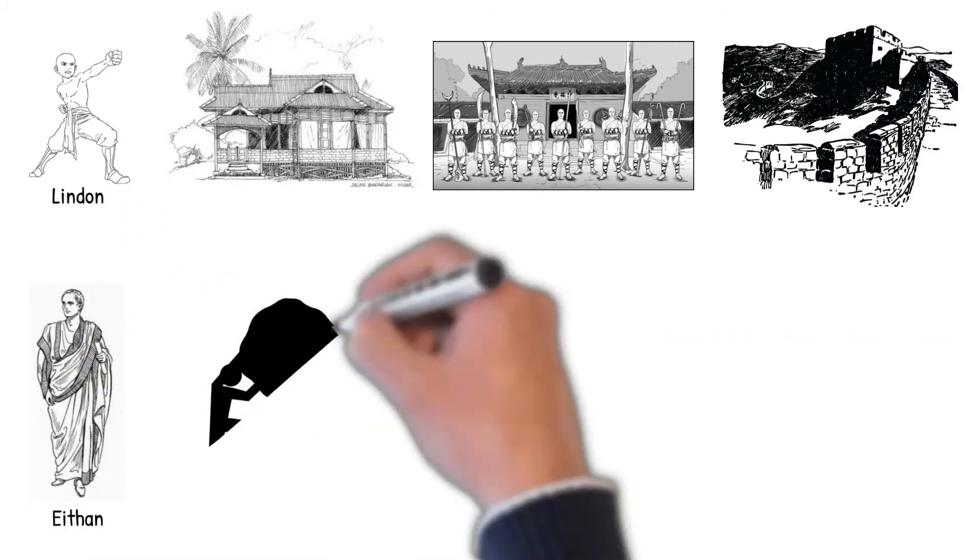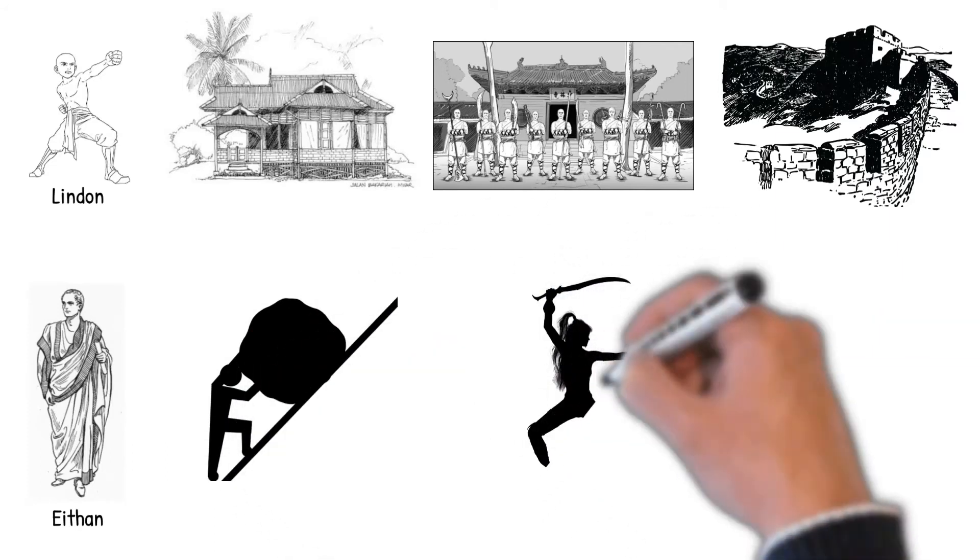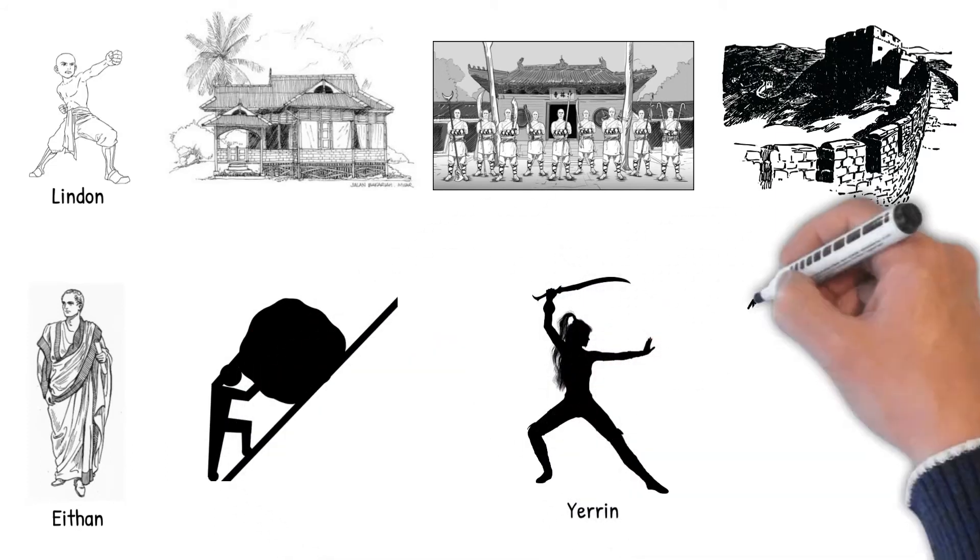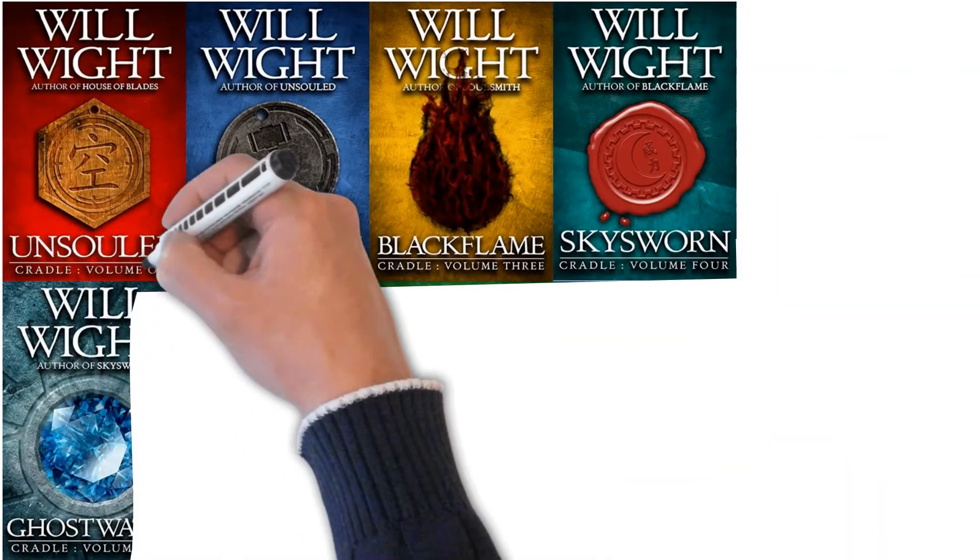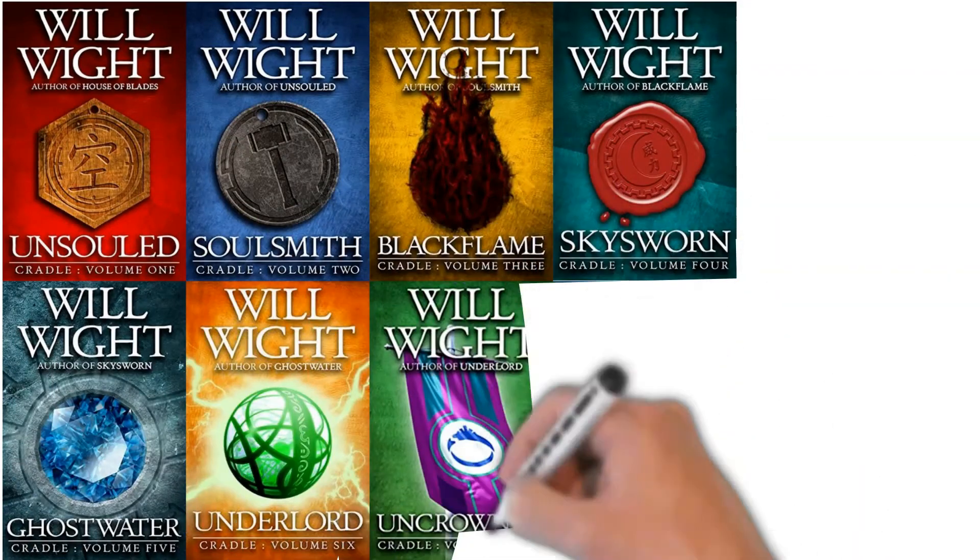The books focus on the challenges he faces, his relationship with Yerin, and the levels he ascends in his quest for mastery. There have been seven books in the Cradle series, with Uncrowned ending on a cliffhanger.